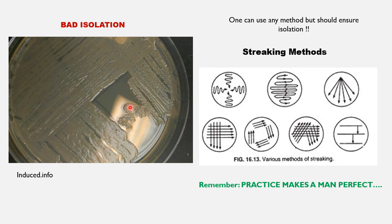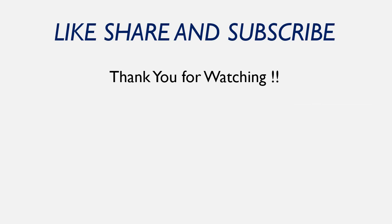These are other methods used for streaking. Use whichever technique you are confident will give you isolation. If you are new to streaking, practice makes perfect — this is a very basic and essential skill for a microbiologist. Practice until you consistently get isolation in one go. That was all about streaking or the streak plate method. Thank you for watching — please like, share, and subscribe, and if you'd like videos on other topics, mention them in the comments or reach out via the email in the description.